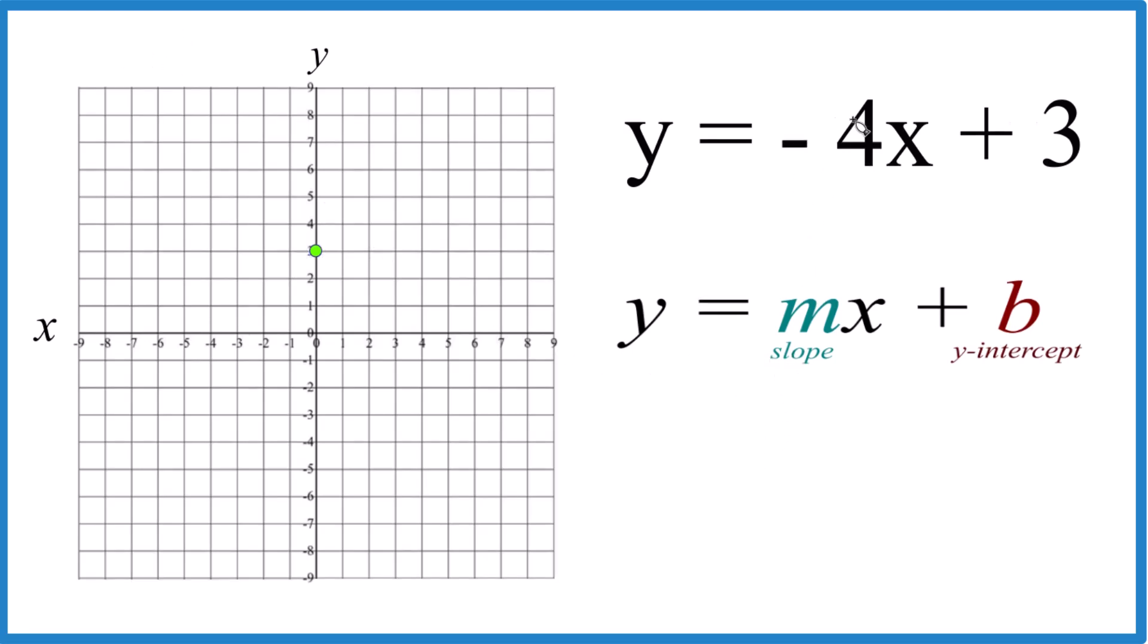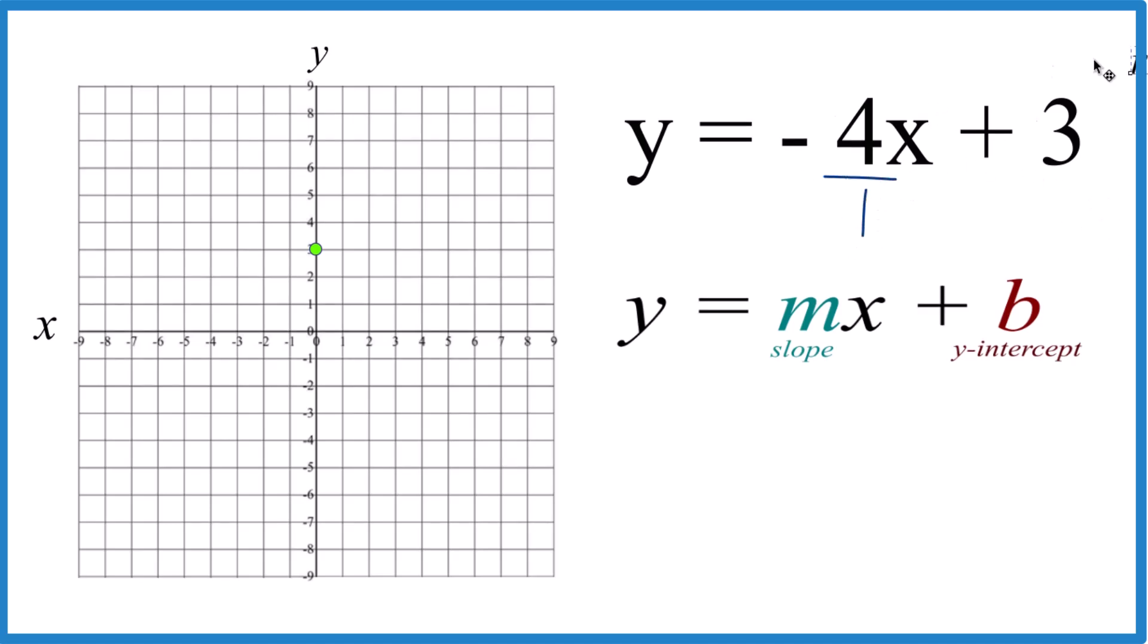For the slope, it's usually best to call this negative 4 over 1. It's still negative 4, but now what we can do, we can call the 4 the rise, run. So negative 4 is the rise, 1 is the run.